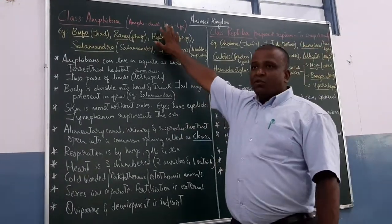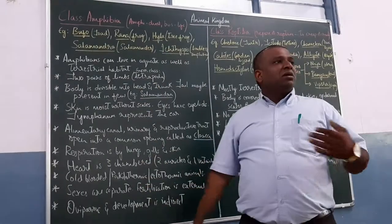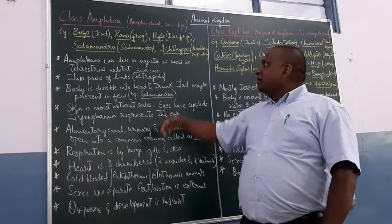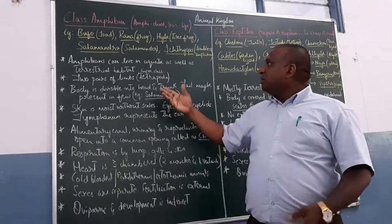So these are the examples that you have to remember under amphibians. With these examples, let us discuss about various characteristics of them. Amphibians can live in aquatic as well as terrestrial habitats.